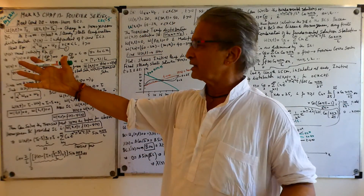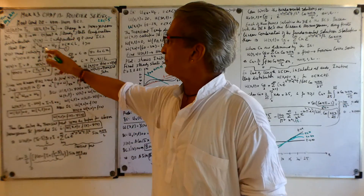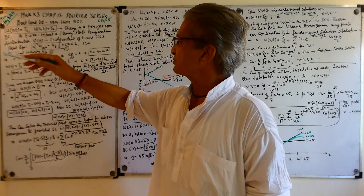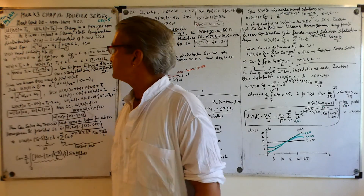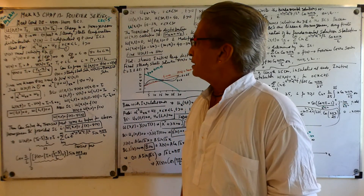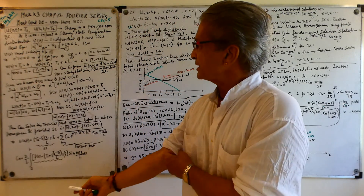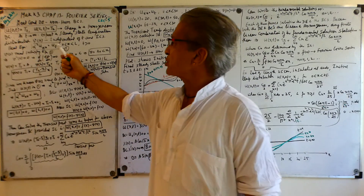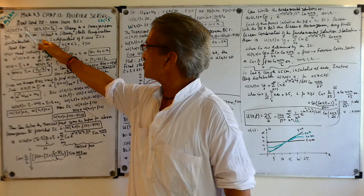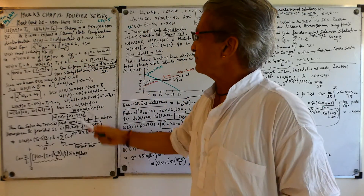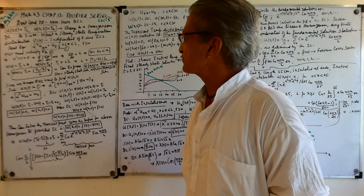We say that V(x) is the steady-state temperature, meaning as time goes to infinity, whatever the initial conditions, the temperature is going to settle down and have a profile enforced by these two boundary temperatures. V(x) is independent of time because it represents the t→∞ solution, independent of the initial conditions.